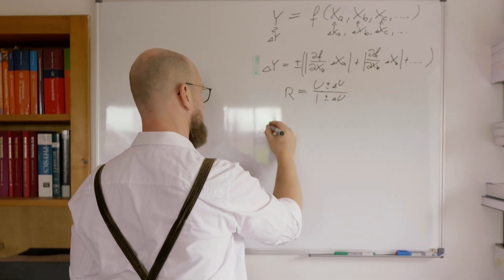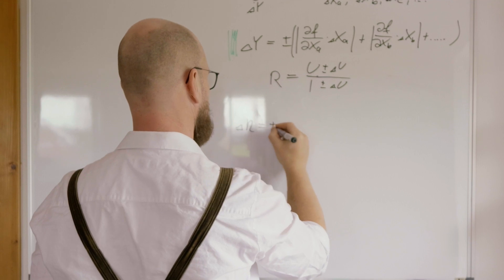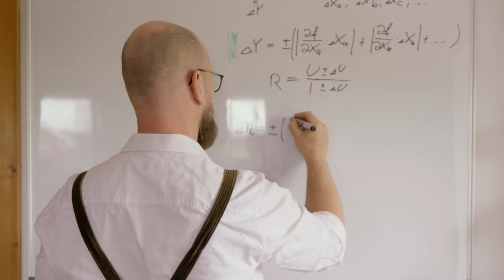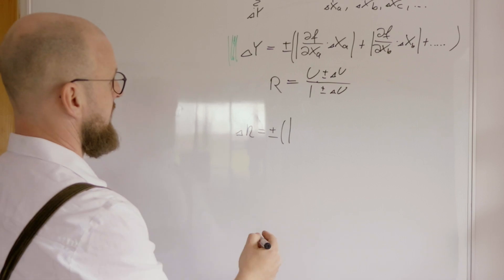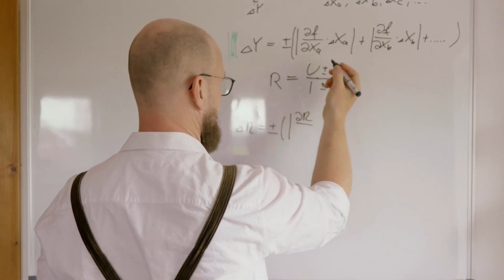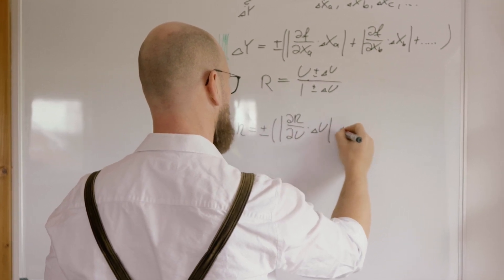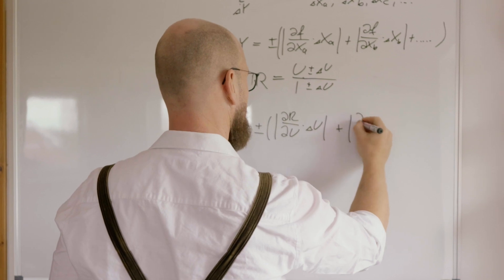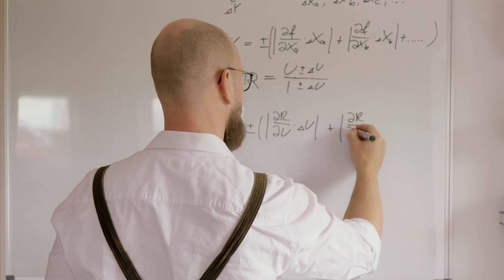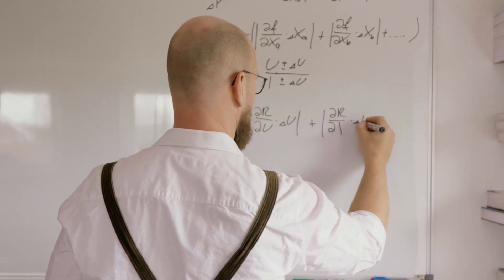We just get an error of, now we use that formula, plus, minus, brackets, the derivation of R to the, let's take U, times the error in U, plus, plus, the derivation in the current, I, times the error in I.